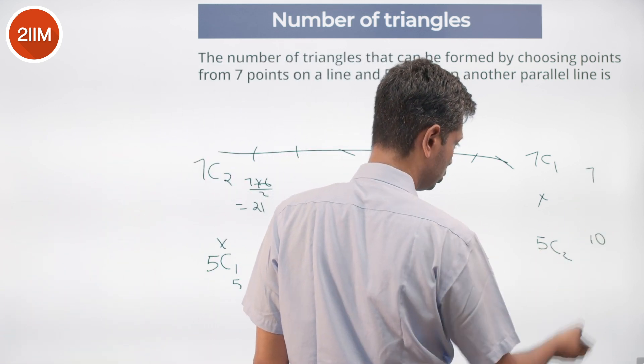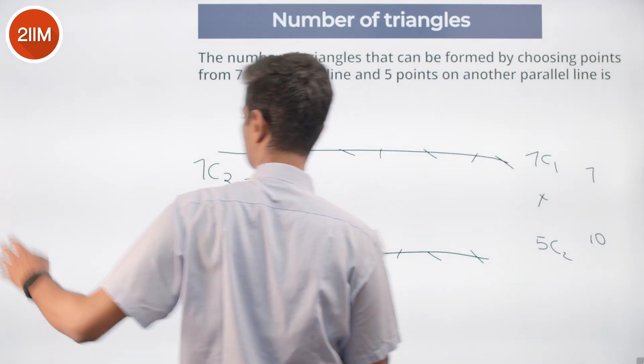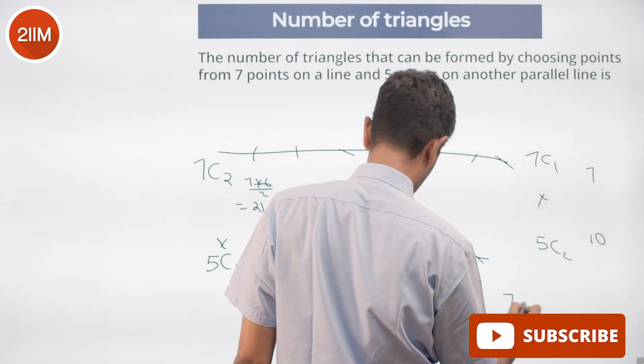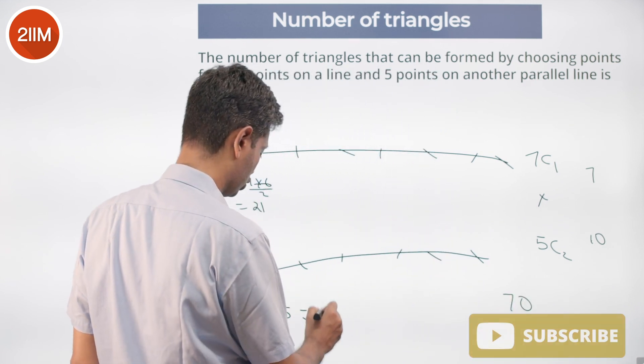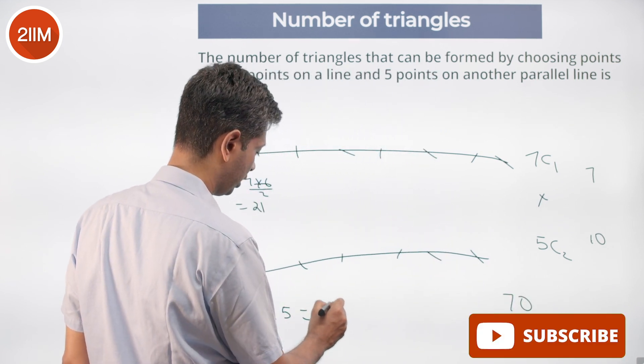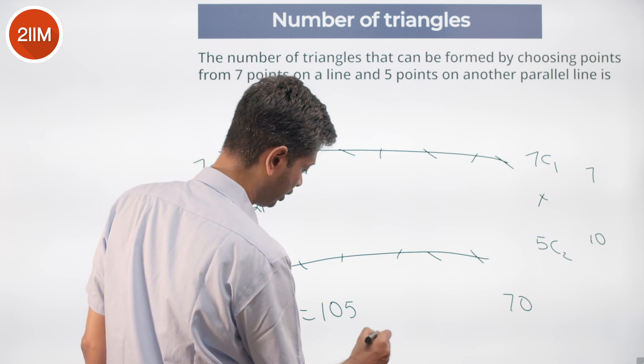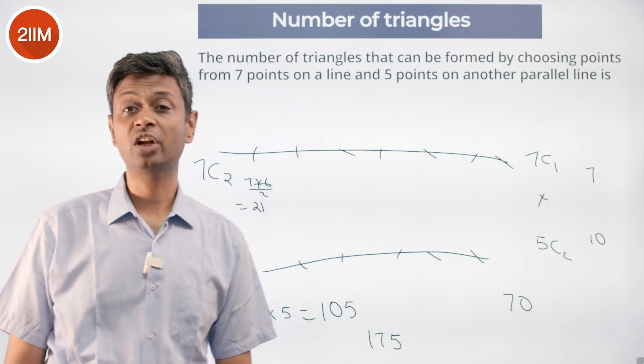7 into 10. 7 into 10 is 70. 21 into 5 is 105. 105 plus 70 is 175. Easy as pi, very straightforward.